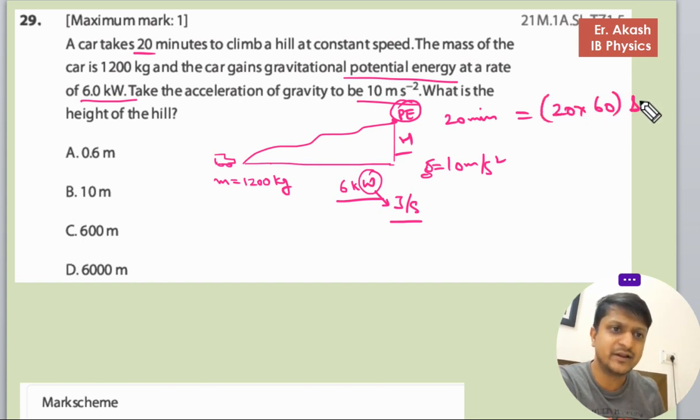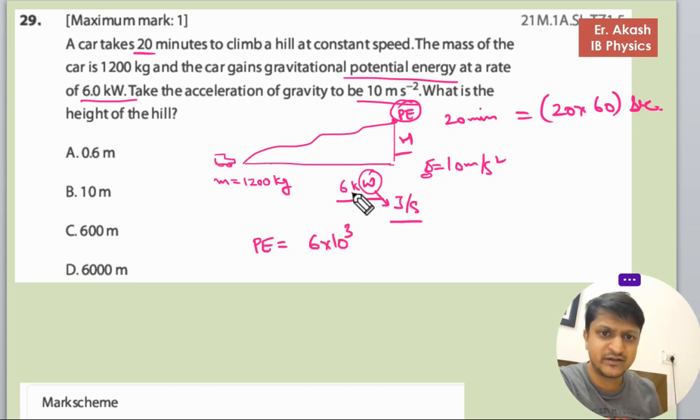So the total potential energy will be 6 × 10³ (because it's in kilowatts, we convert it). This is joules per second, and now we multiply with the total seconds.